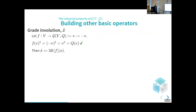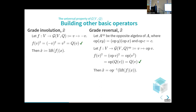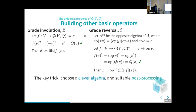To give a few more examples: grade involution is an easy one — you take every vector and send it to its negation. You can check this satisfies the rules: f(e)² gives the quadratic form because the signs cancel. So now we can define grade involution by the universal property. Grade reversal is a bit more tricky — we need to build a new algebra called the opposite algebra, which behaves exactly like the original algebra but with multiplication swapped. When doing grade reversal, we send every vector into this opposite algebra, so when we multiply them, the multiplications happen in the wrong order, and when we take it back out we've successfully reversed every basis blade. This shows the key trick: we have to pick a clever algebra to map our universal property into, and then clean up the result afterward.